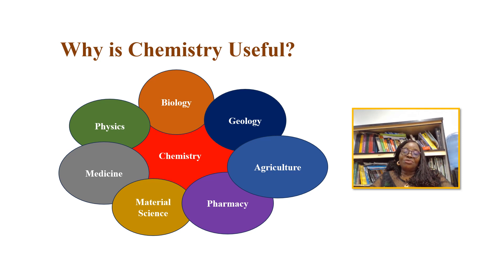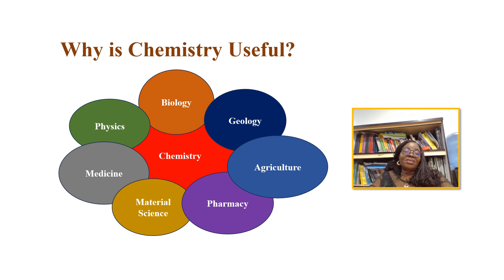Why is chemistry useful? Chemistry is important because it is central to the understanding of disciplines such as biology, physics, geology, material sciences, medicine, and many other branches of engineering. Chemistry plays a major role in our economy, and chemicals affect our daily lives in a wide variety of ways. Everything we put on, what we eat — the food — they are all made of chemicals. That is why chemistry is considered to be a central science.